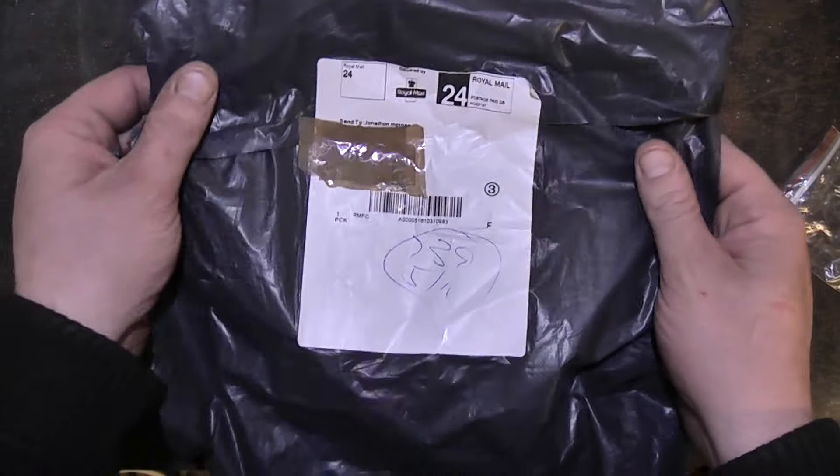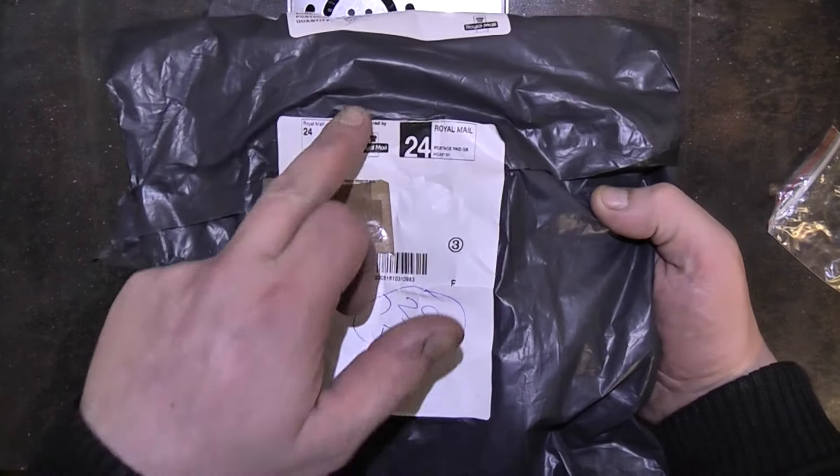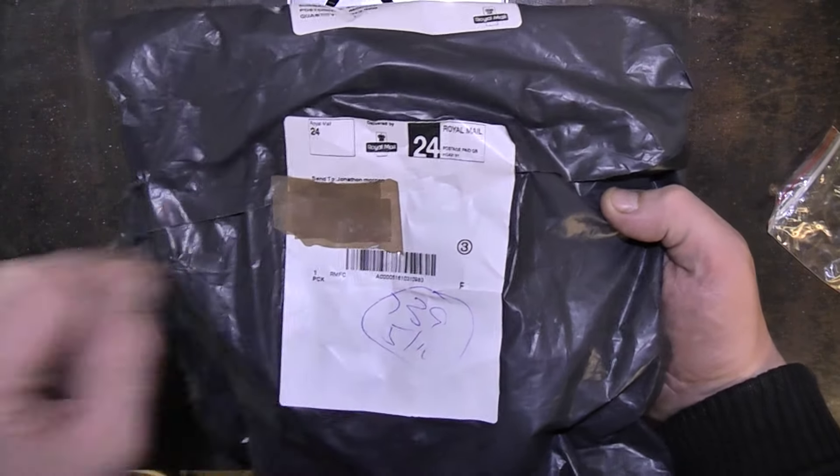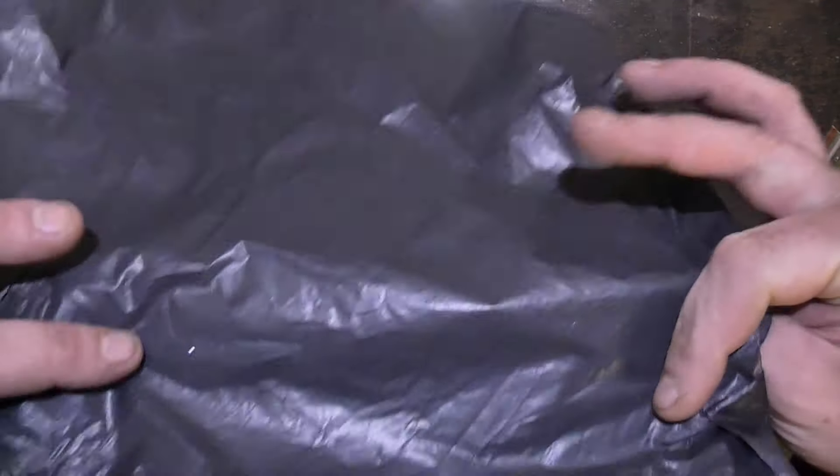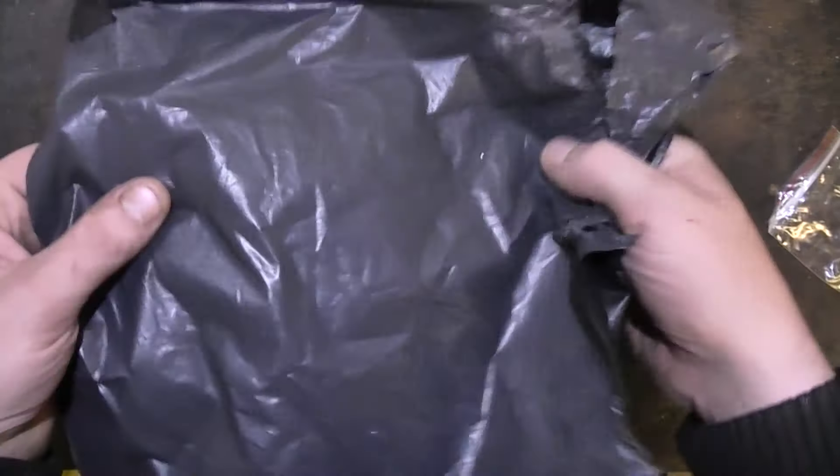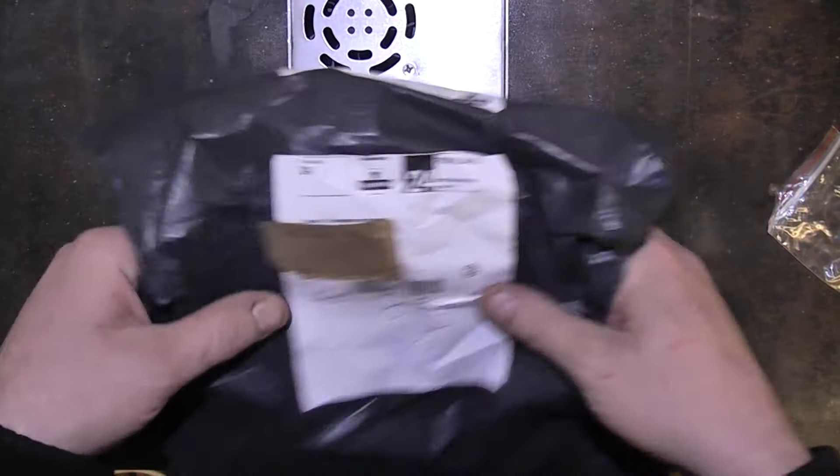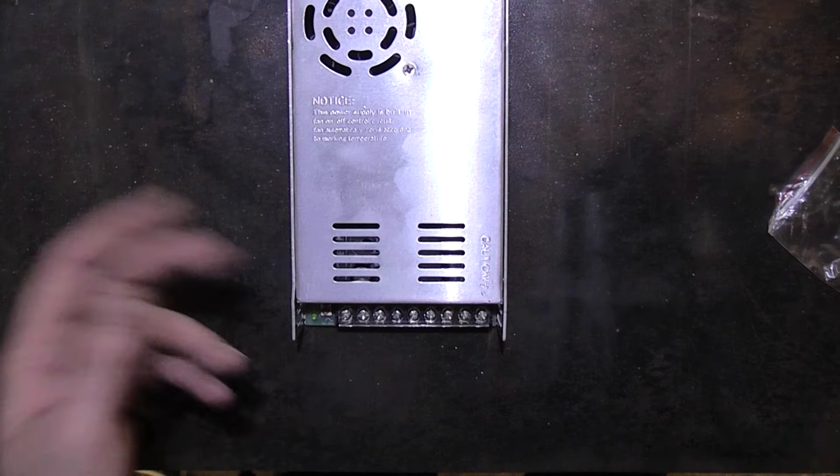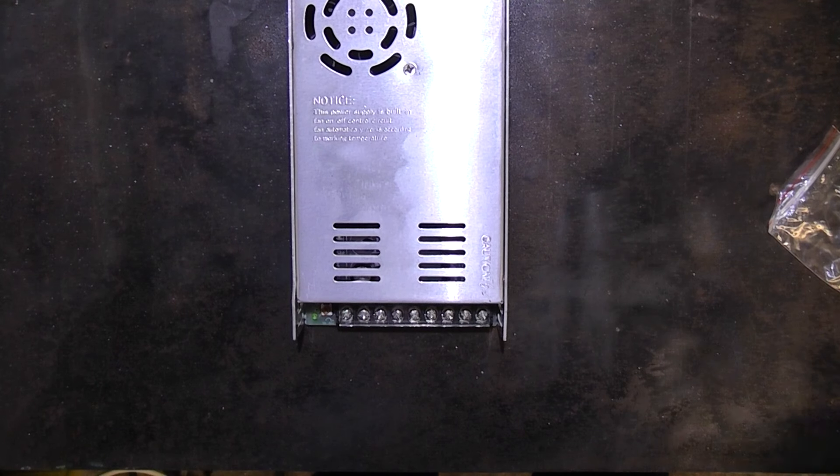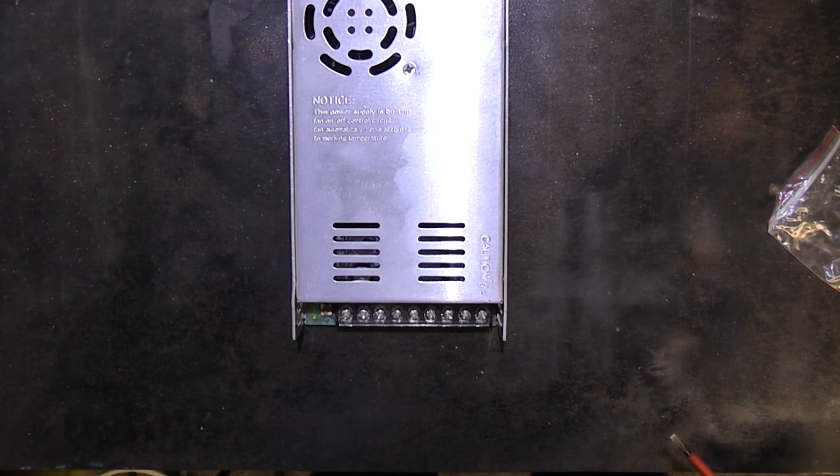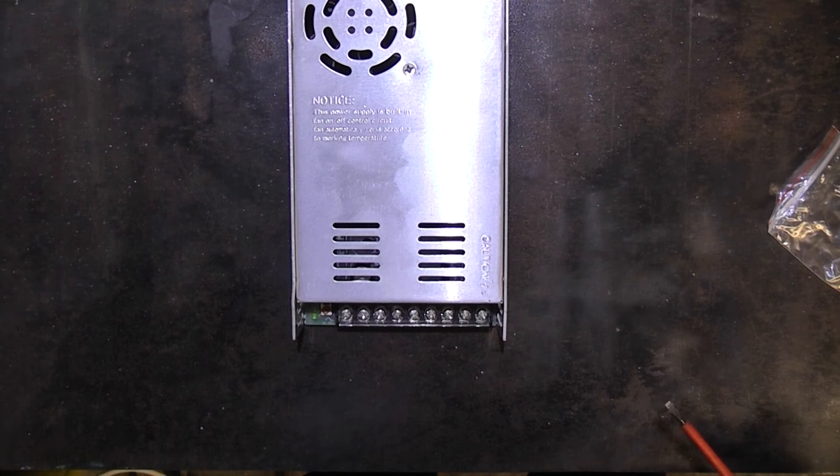Here's the packaging, delivered by Royal Mail. There's my address taped over and it's got no customs declaration on it. This must have been shipped from within the UK, so that's a new one on me. I'm presuming the seller must have an outlet in the UK.